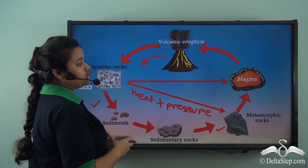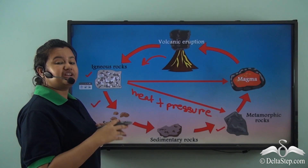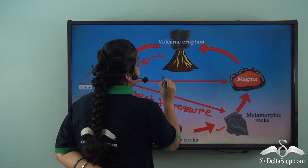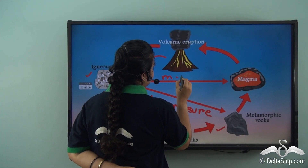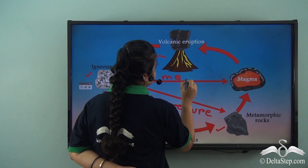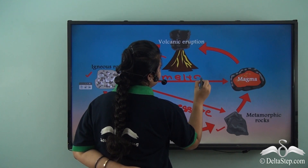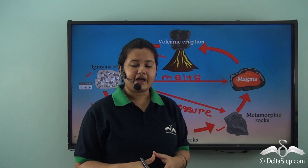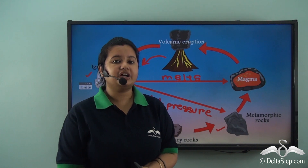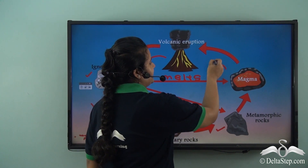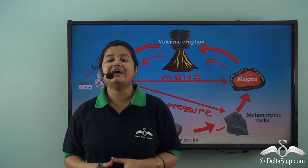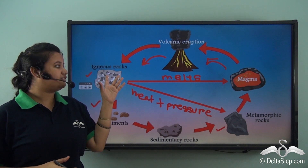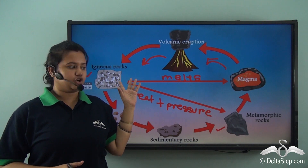Igneous rocks also get buried deeper into the earth over time and melt into magma. Again, this magma under immense pressure erupts as a volcano and flows as lava. Lava gradually condenses and forms igneous rocks.